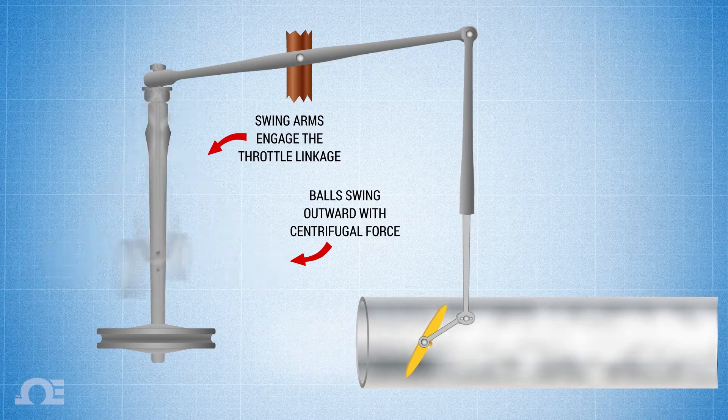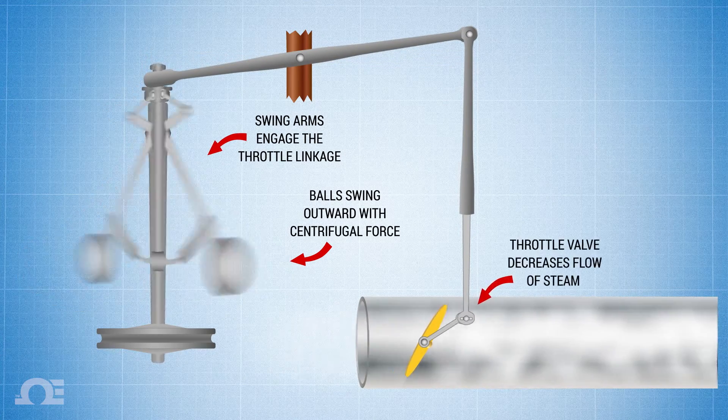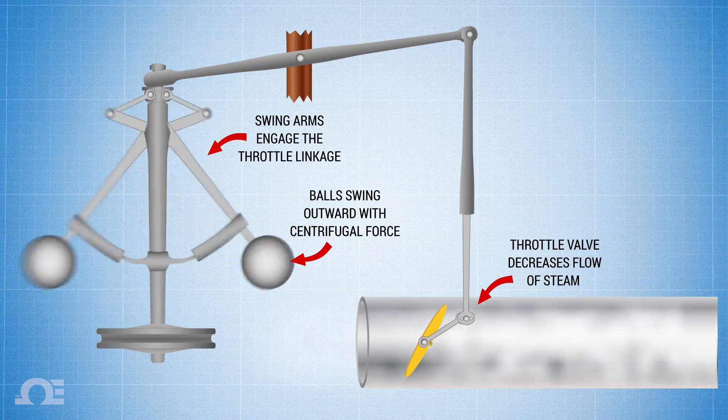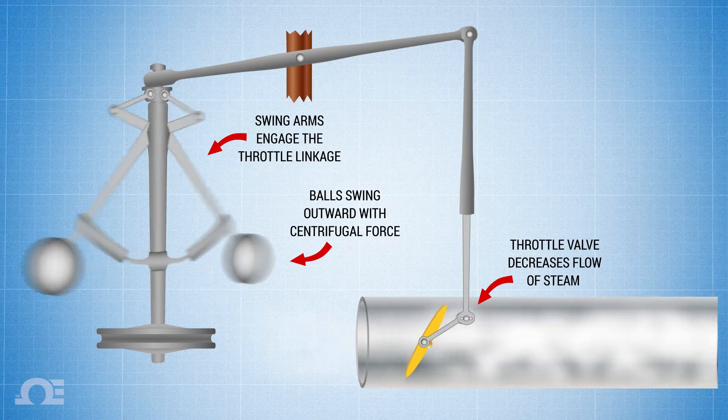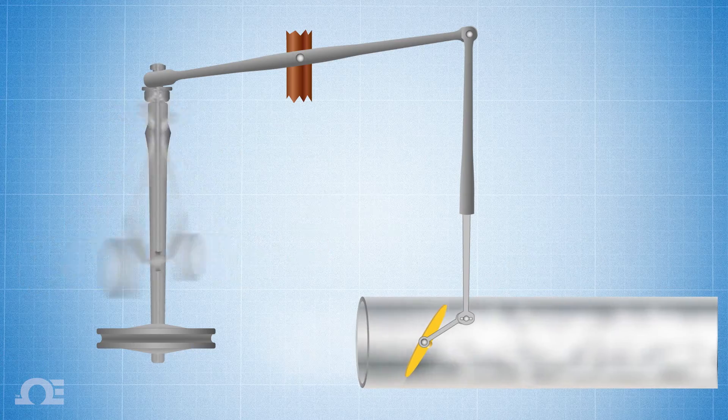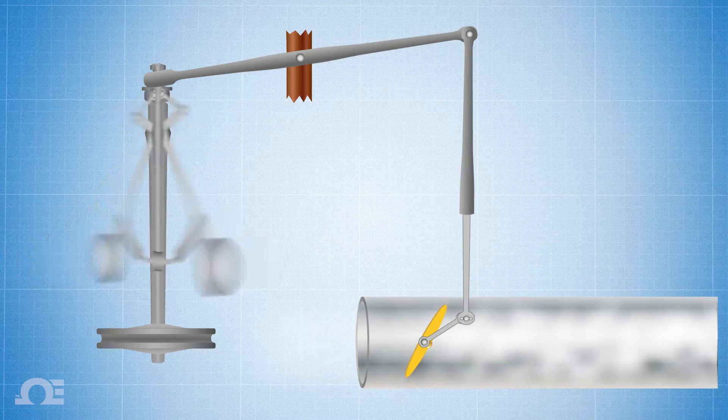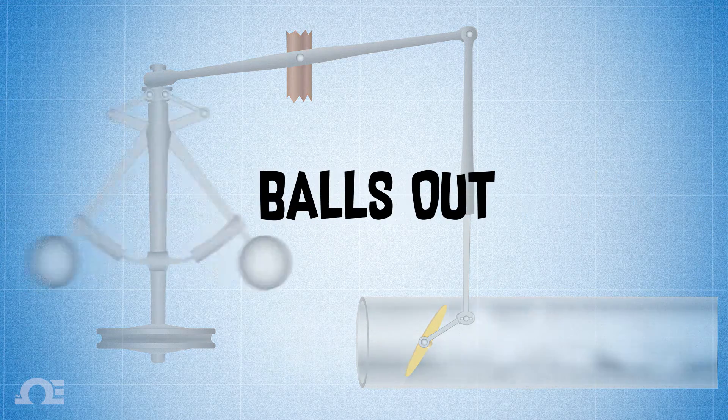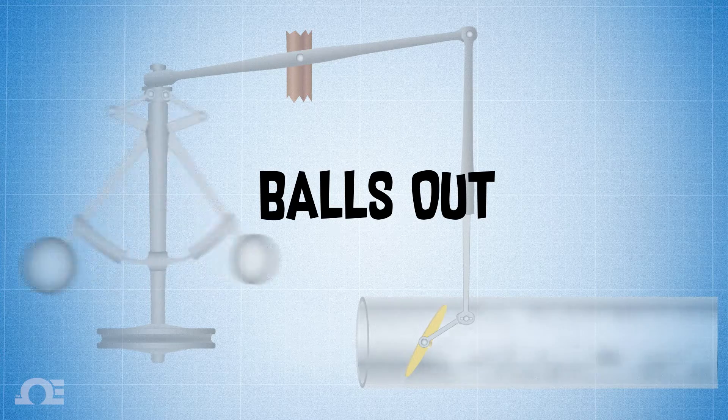The swing arms are connected to a lever to engage the throttle valve, decreasing the amount of steam going into the engine's cylinder, thus regulating the speed of the engine automatically. So, when an engine is running at full speed, the balls are out. Hence, the meaning of the term balls out is not as salty as you think it is.